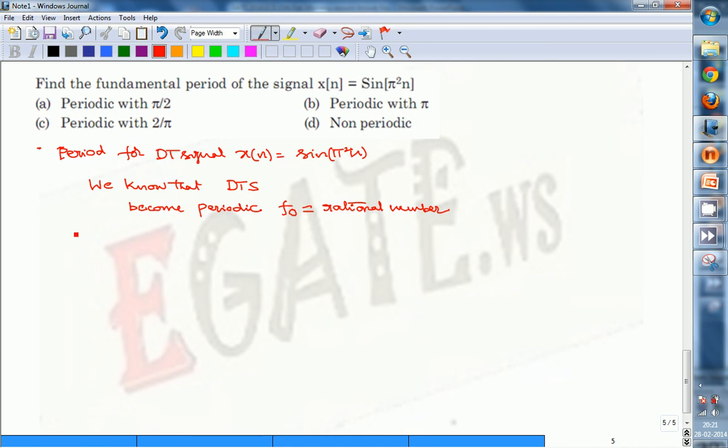So, from the given signal x[n], we know that ω₀ equals π².